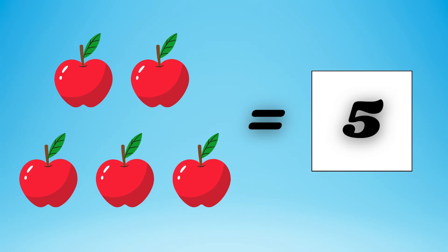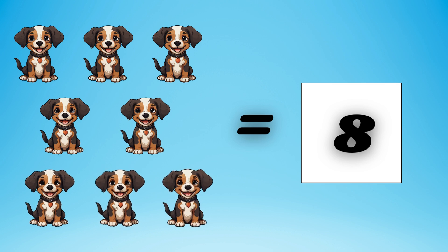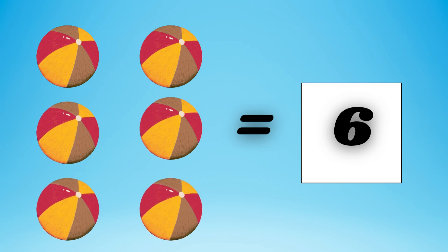5 — equal to 5 apples. Count the dogs: 1, 2, 3, 4, 5, 6, 7, 8 — equal to 8 dogs.